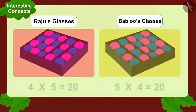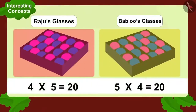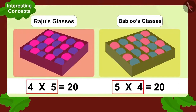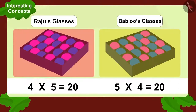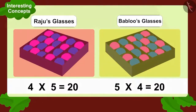The multiplication seen through both Raju and Bablu's glasses was exactly the same. Children, isn't it interesting? We can write any multiplication in two ways like this and its answer will always be the same.